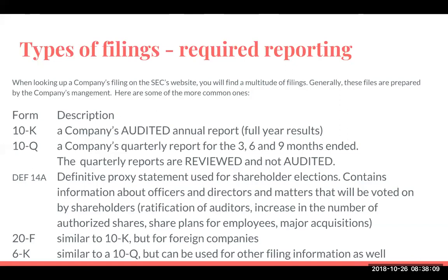When I look at the Definitive 14A, this is what we call a proxy statement. Generally, if a company is listed on the NASDAQ or New York Stock Exchange, they are required to have an annual meeting. At that annual meeting, they generally ratify auditors or appoint new auditors, increase the number of shares — there might be a variety of different things shareholders will be voting on. Another one is Form 20-F, which indicates a foreign filer. So when you look up a company such as Alibaba, you will not see a Form 10-K — rather, you'll see a Form 20-F, because they are a foreign issuer listing their shares here in the United States.